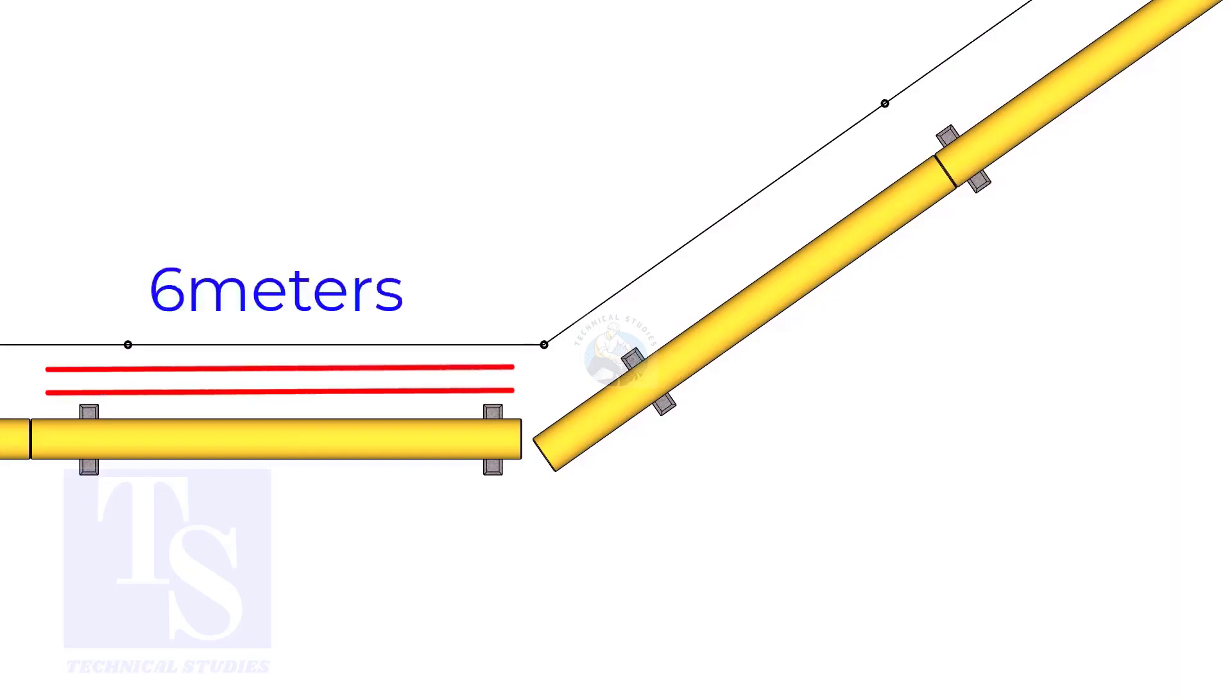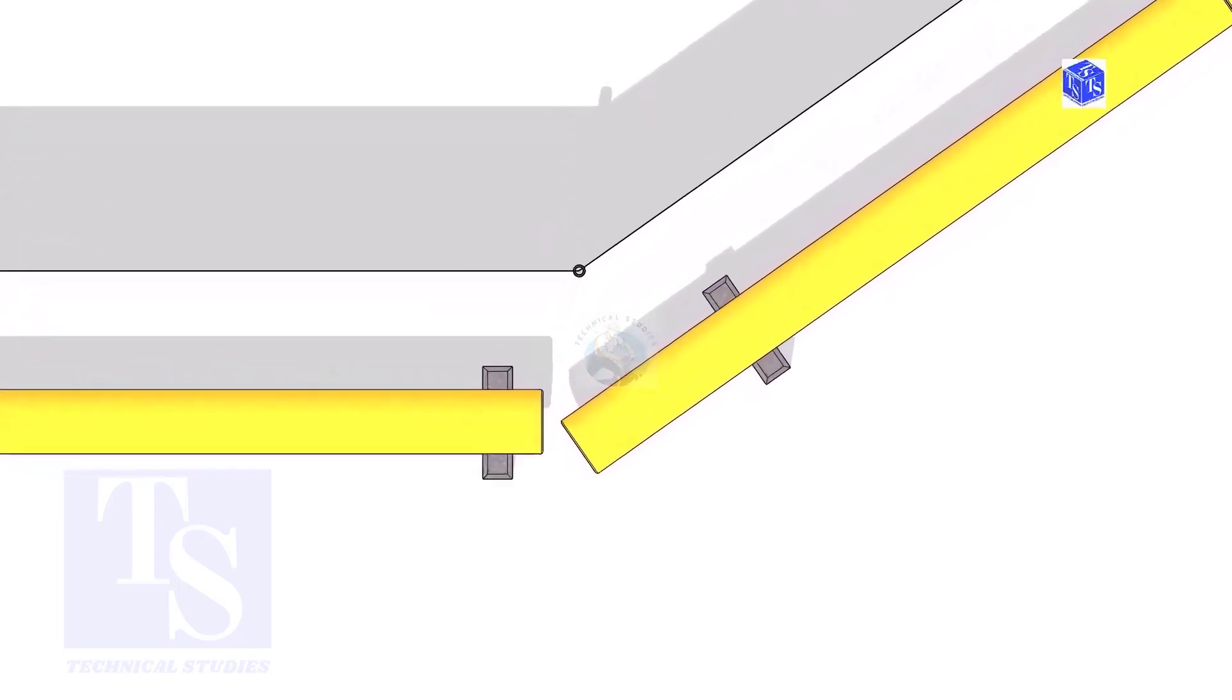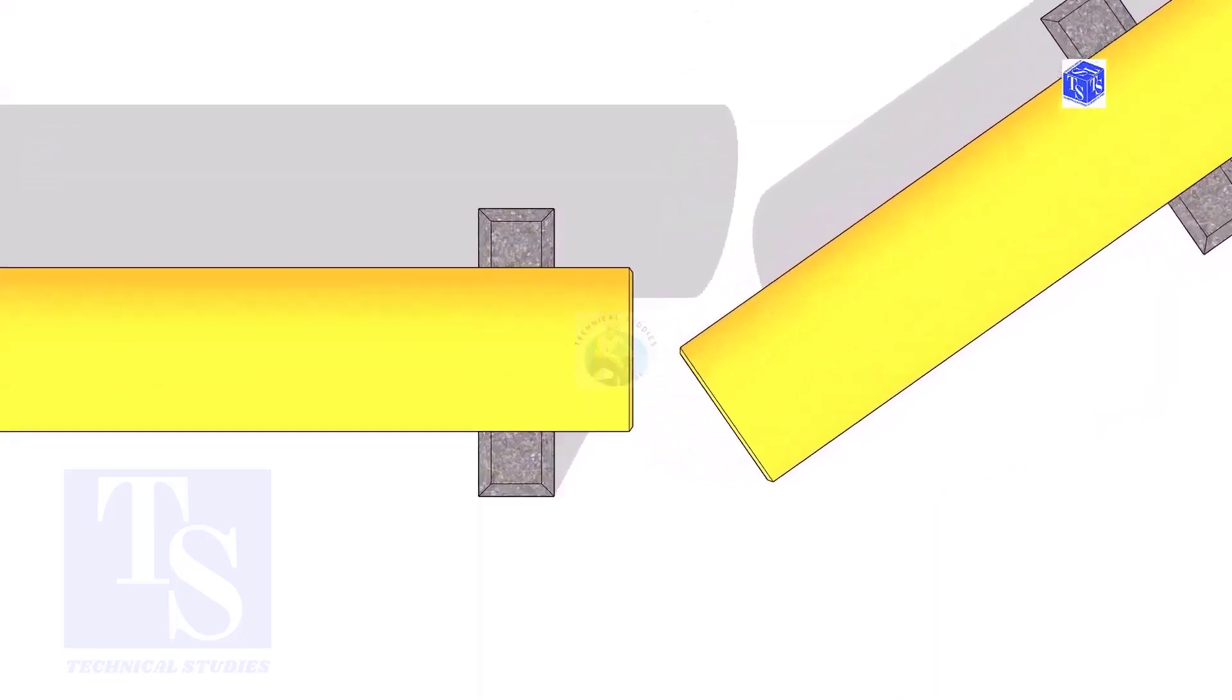The pipe shall be parallel to the fencing, not necessarily the entire length, but at least 6 meters on both sides. The center lines of both pipes don't need to be in a line.